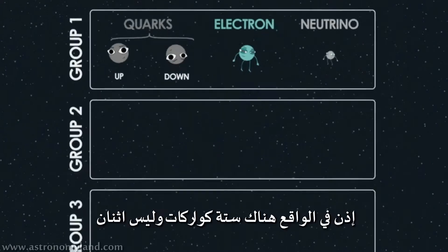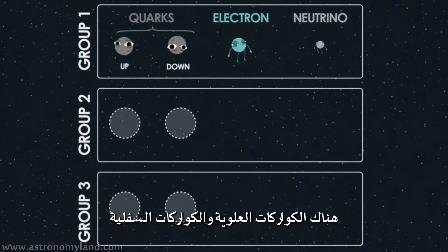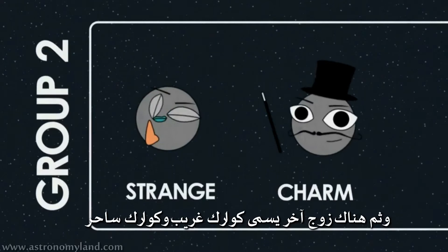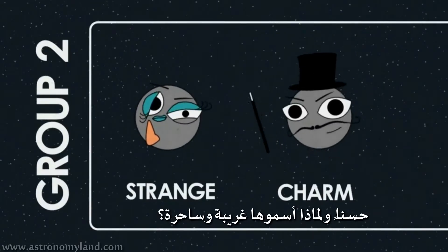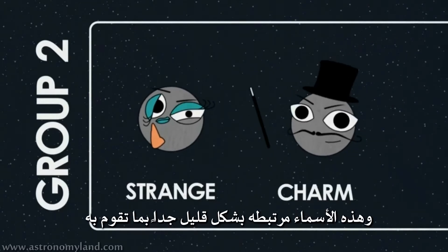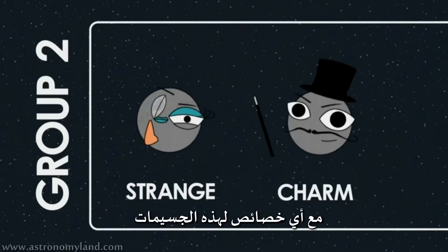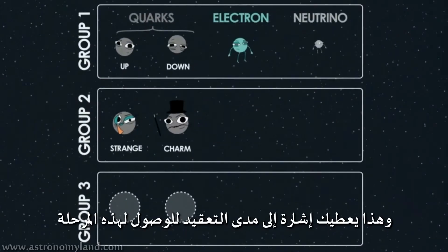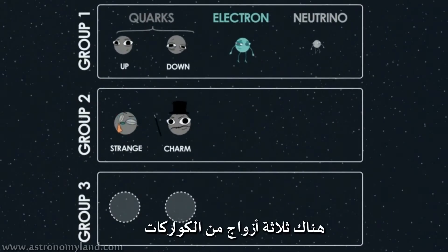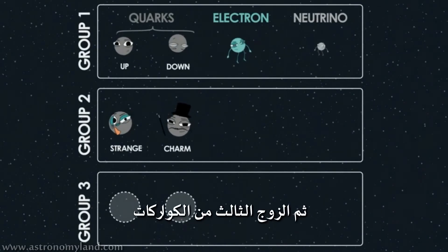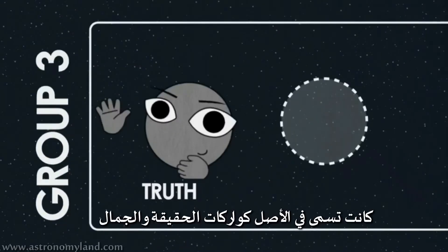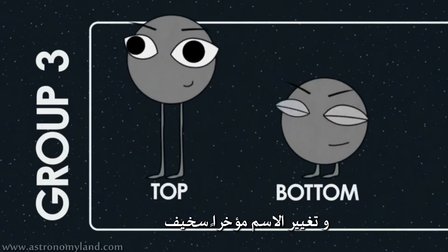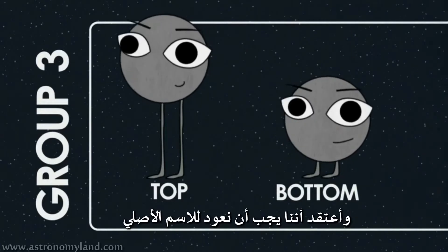So there's actually six quarks, not two. There's the up and down quark, which form a pair. And then there's another pair: the strange and charm quark. Why are they called strange and charmed? These names have very little to do with any properties of these particles - they're just given these names so we can keep track of them, which should give you a hint as to how complicated this is going to get. There are three pairs of quarks. The third pair was originally called the truth and beauty quarks, but now we call them the top and bottom quarks.